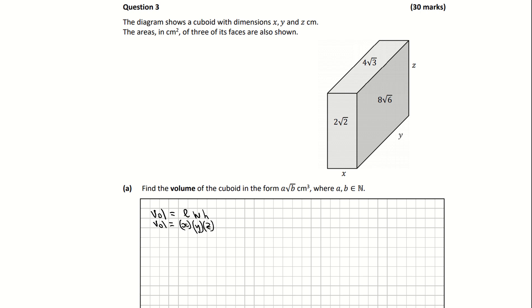This particular face is length by width which would be x multiplied by height, so x multiplied by z is giving me an area of 2 root 2. This front face is y multiplied by z, which has an area of 8 root 6. And then my third face on the top of the cuboid is x multiplied by y, which is giving me an area of 4 root 3.